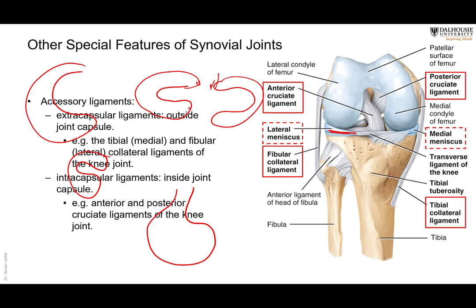The horns of the menisci may be torn during knee injuries. They are sometimes called 'cartilages' in clinical practice. A knee joint injury may involve both the ligaments and the menisci — not the articular hyaline cartilages, but the intra-articular fibrocartilage menisci.